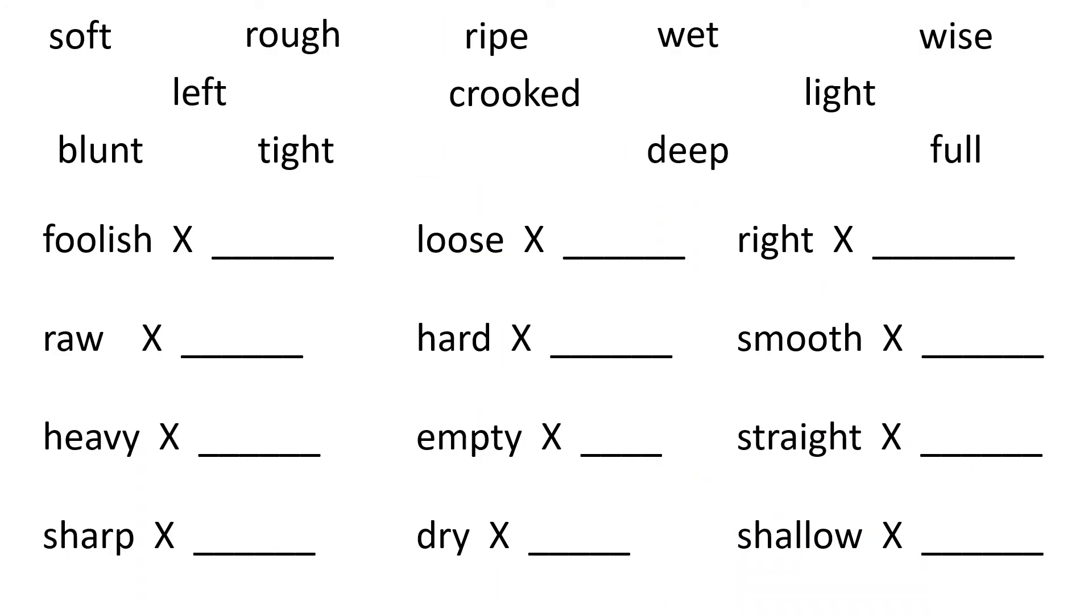Children, let us do a few words. We have seen a lot of pictures of opposites. Now we will do with words. Foolish. What is the opposite of foolish? Wise. Foolish means you do silly things and wise is somebody who does it correctly. Well.